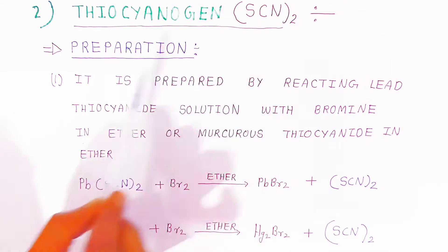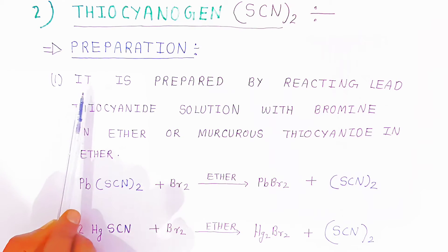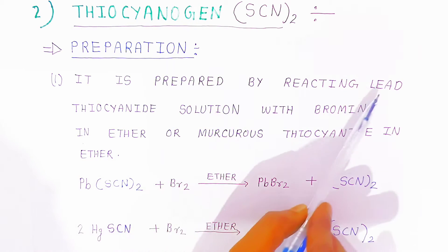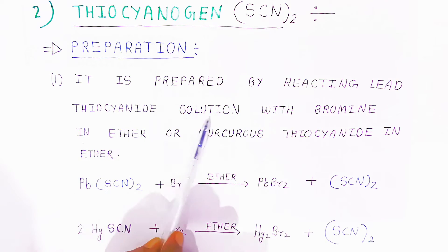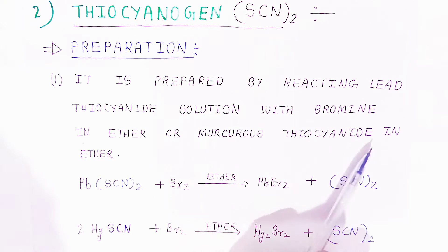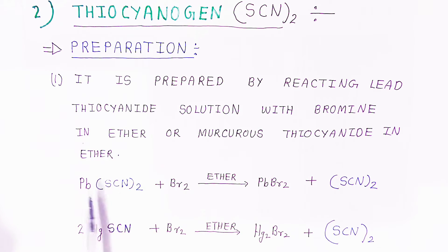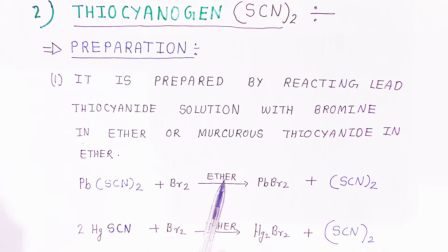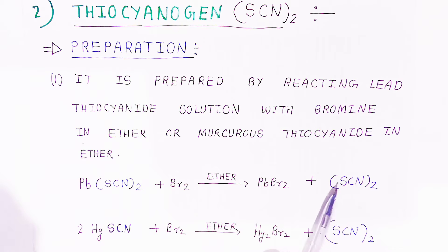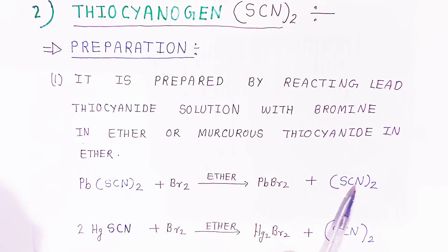How are we going to prepare this compound? First preparation: it is prepared by reacting lead thiocyanide solution with bromine in the presence of ether, or mercury cyanide in ether. So lead thiocyanide with bromine in the presence of ether gives lead bromide and thiocyanogen — thio meaning sulfur and cyanogen.